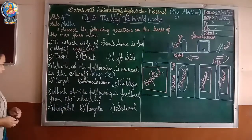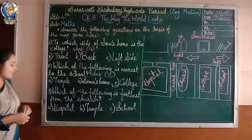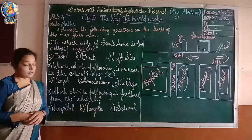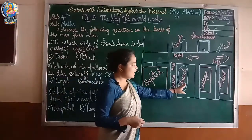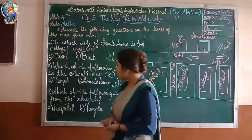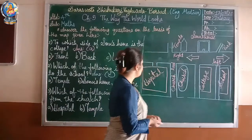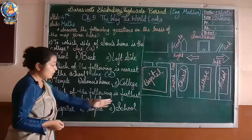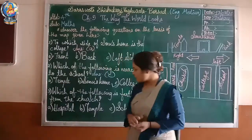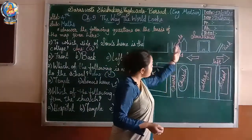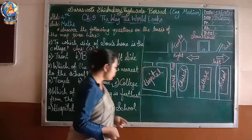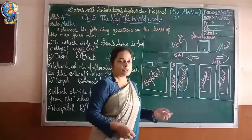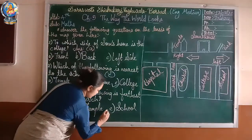Third question: which of the following is farthest from the church? Options are A. Hospital, B. Temple, C. School. Hospital is beside the church. Temple is in front of the church. School is a little bit away from the church. So the answer is option C, school.